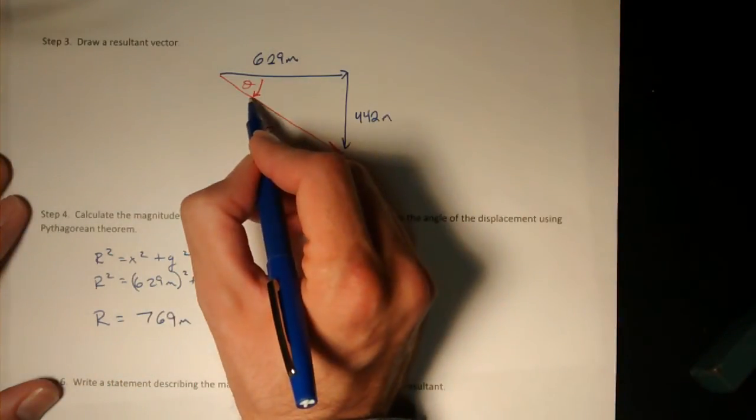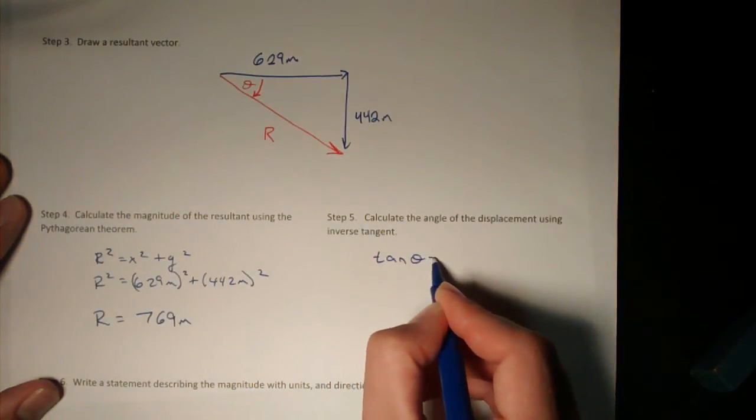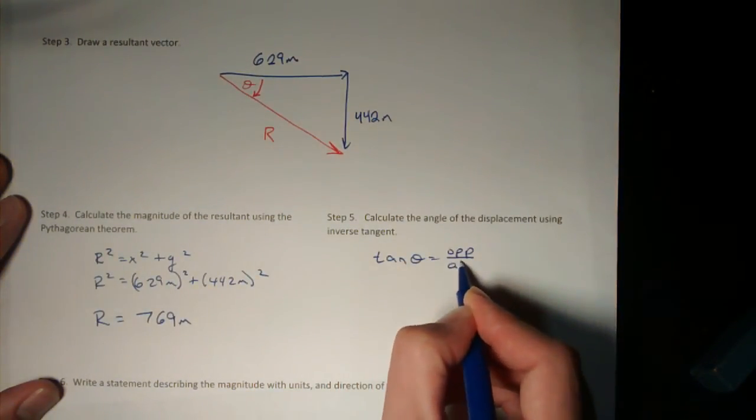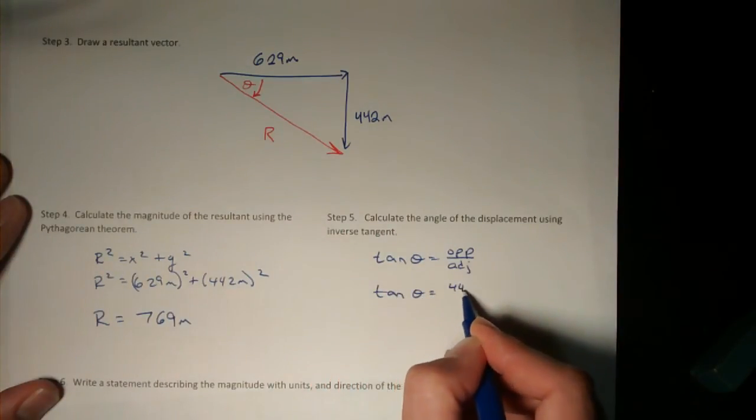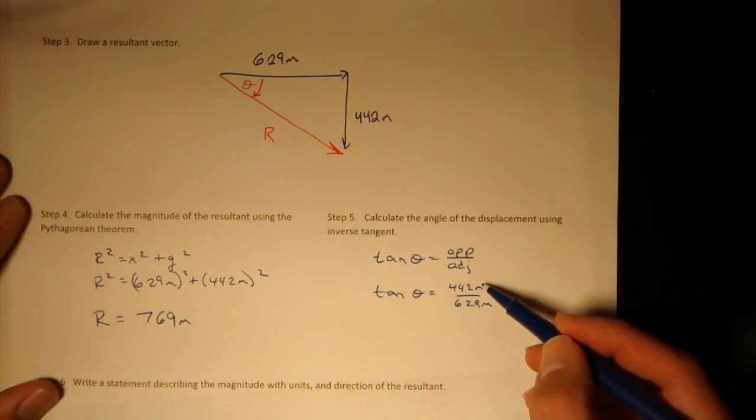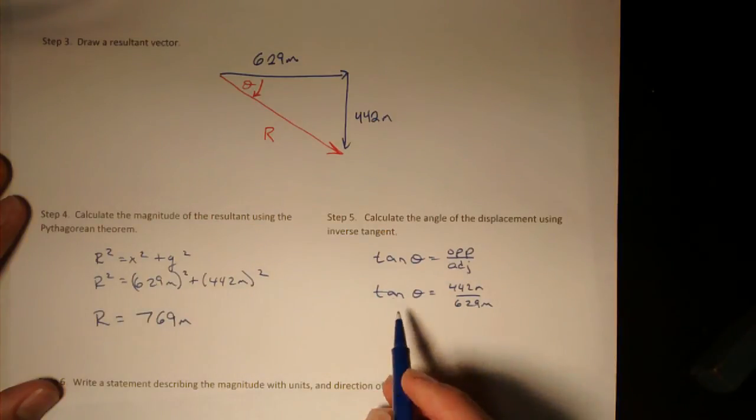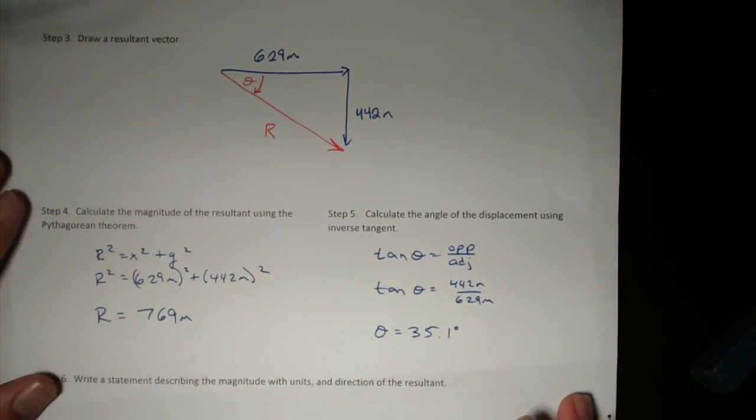To get this angle, I'm going to use the opposite side and the adjacent side. So I'll use tan theta equals opposite over adjacent. Tan theta equals 442 meters over 629 meters. When you type this into your calculator, you'll type 442 divided by 629, and then take the inverse tangent to get theta alone, and you should get 35.1 degrees. If you did this and you don't get the angle, make sure that you're in degrees and not in radians.